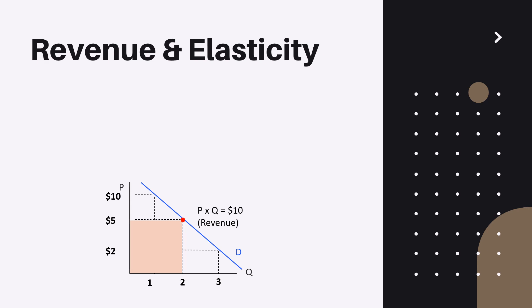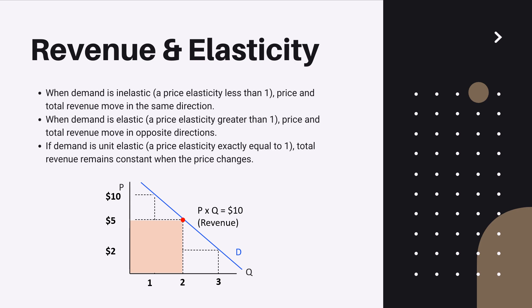And here you can see the graphical representation of the calculation. Now it's important to remember some general rules. First, when demand is inelastic, which means a price elasticity is less than one, price and total revenue move in the same direction.